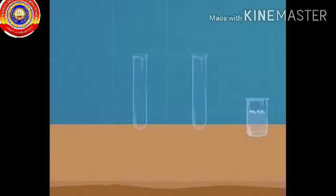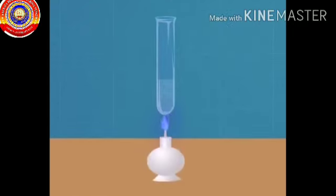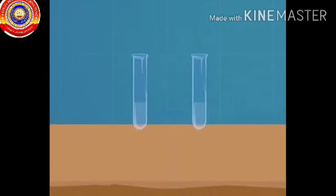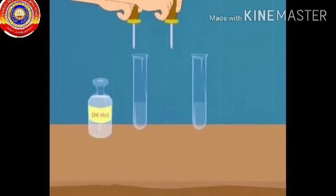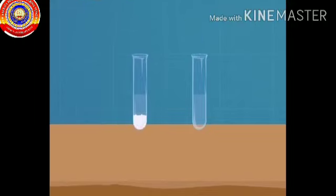Take equal volume of dilute sodium thiosulphate solution in two test tubes. Heat one boiling tube for some time. Add dilute hydrochloric acid in equal amount in both the boiling tubes.